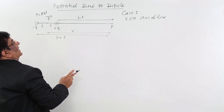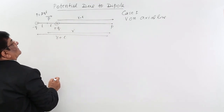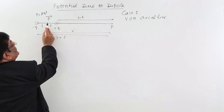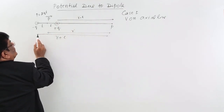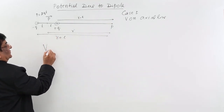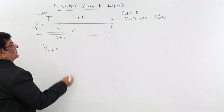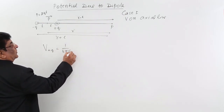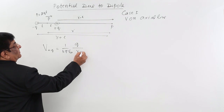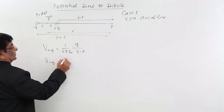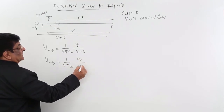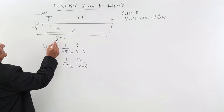We know the formula for calculating potential due to point charges. The plus charge is at a distance of R minus L from point P, and the minus charge is at a distance of R plus L. So V due to +Q equals (1/4πε₀) × Q/(R − L), and V due to −Q equals (1/4πε₀) × (−Q)/(R + L).